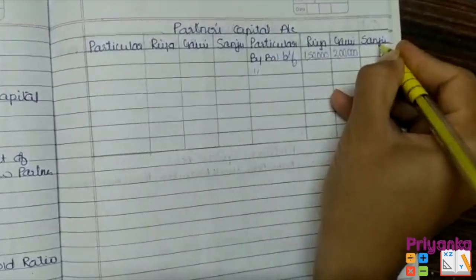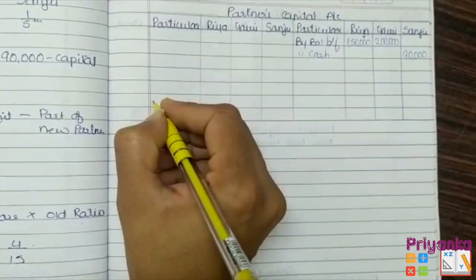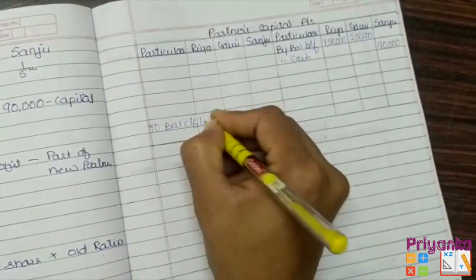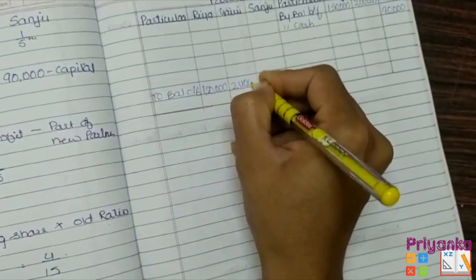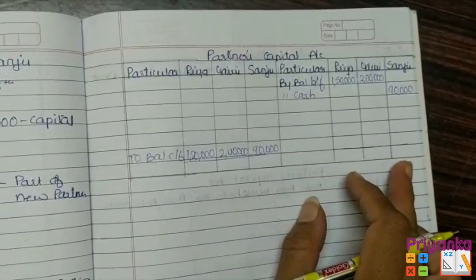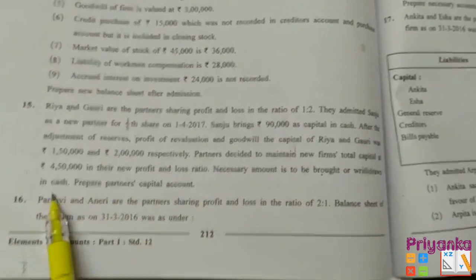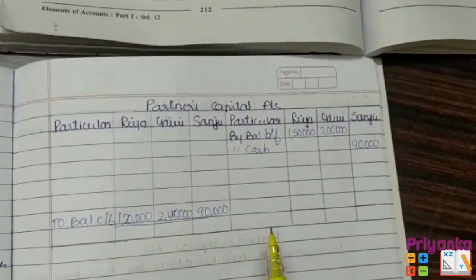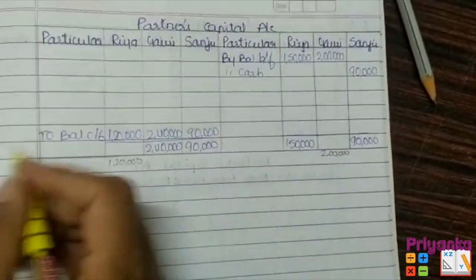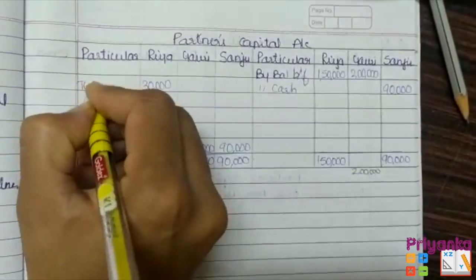The other information is that Sanju is coming with capital in cash of Rs. 90,000. We found that the new capital — the closing balance — to be distributed among three partners is 4,50,000 in their new ratio: that is 1,20,000, 2,40,000, and 90,000. We now make a total of both sides, and the difference gives the amount to be brought or withdrawn in cash. Riya has 1,50,000 on the credit side and 1,20,000 on the debit side, so the difference is 30,000 withdrawn as cash.